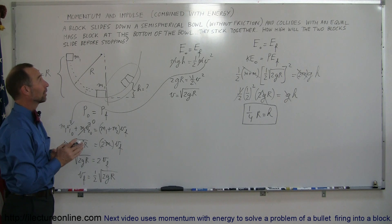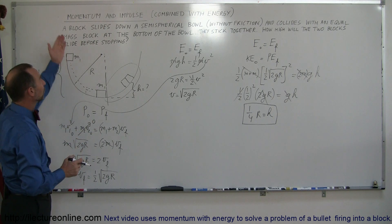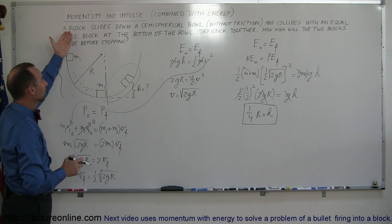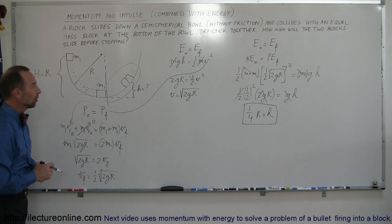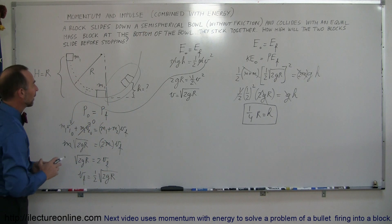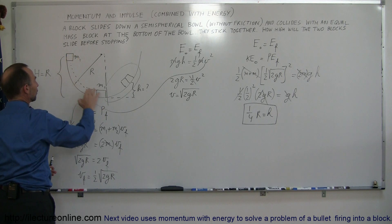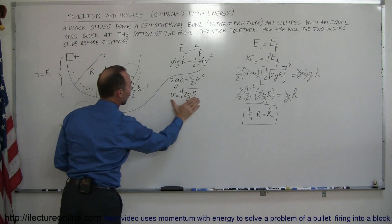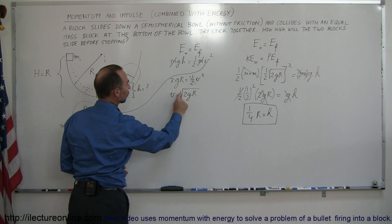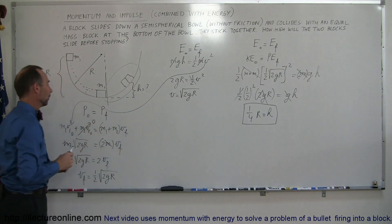So there's a good example. Let me review again — a good example of how to work with momentum and combine it with the conservation of energy. We have a situation where a block slid down the bowl. To find out what the velocity is when this block reaches the bottom, we use conservation of energy. The velocity equals the square root of 2gr, the radius of the bowl.